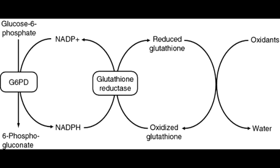What are the consequences of G6PD deficiency? If there is G6PD deficiency, this will lead to a decrease in glutathione. And when there is a decrease in glutathione, there is increased red blood cell susceptibility to oxidative stress. And when oxidative stress occurs, this will lead to hemolytic anemia.